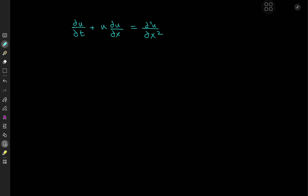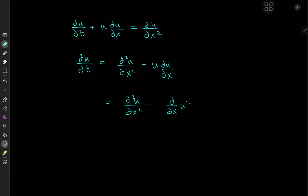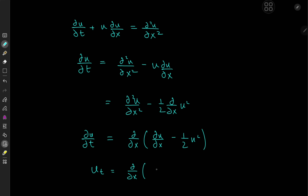So why not take all of the derivative with respect to x terms on one side? We have ∂u/∂t = ∂²u/∂x² minus u times ∂u/∂x. The other term can be expressed as a derivative: ∂²u/∂x² minus ∂/∂x of (u²/2). In compact notation: u_t = ∂/∂x (u_x − u²/2).